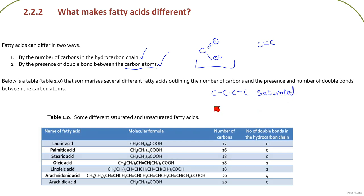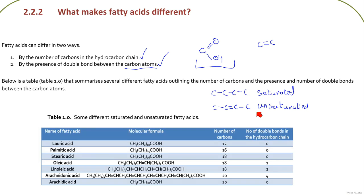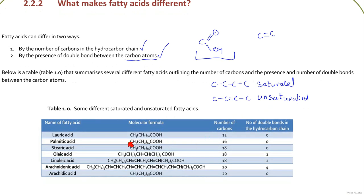If there's a double bond present, the fatty acid is said to be unsaturated. The reason for these terms I'll explain later with some other diagrams. But you don't just have to have one double bond within a fatty acid — you can actually have multiple ones. In this table I've just got a list of some common fatty acids.